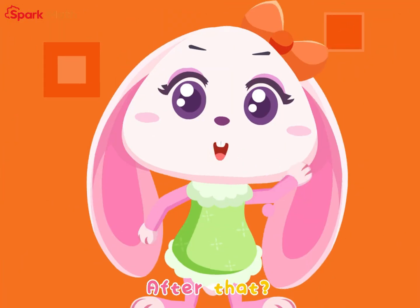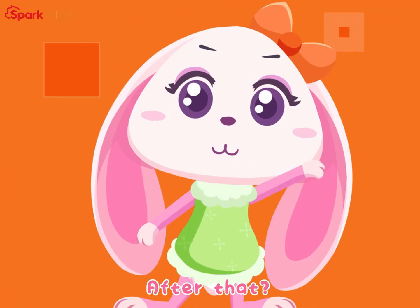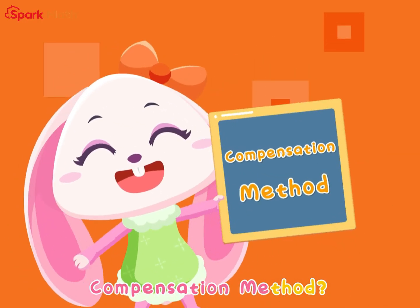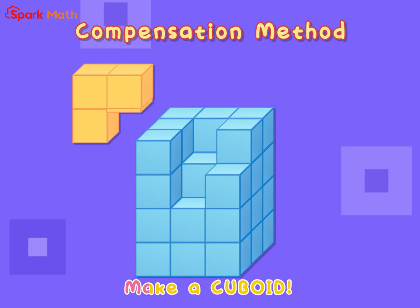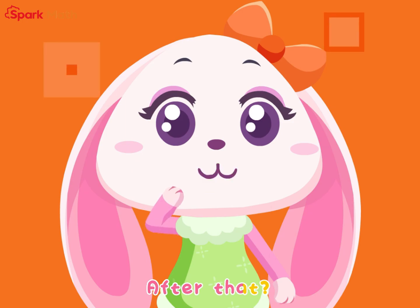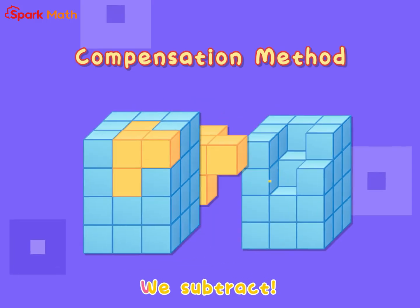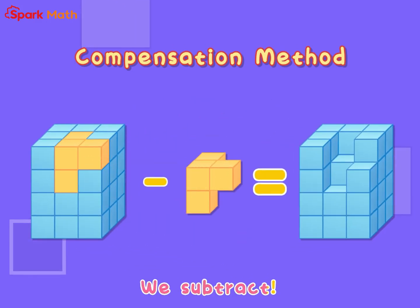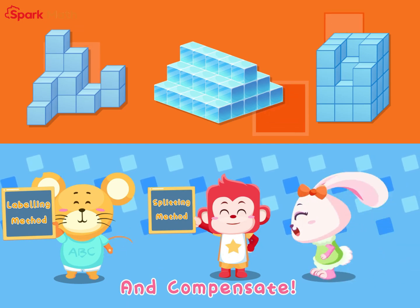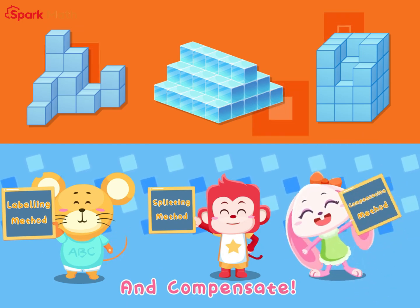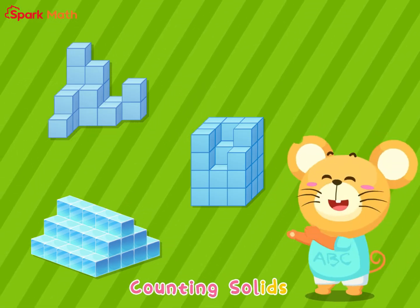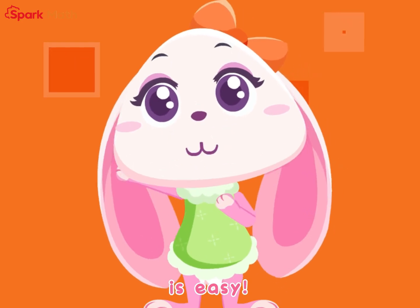After that, we multiply. Compensation method: fake or two void. After that, we subtract. Label, split, and compensate — counting solids is easy.